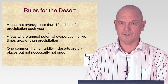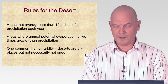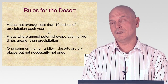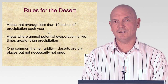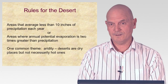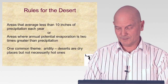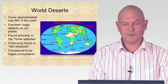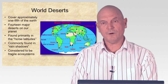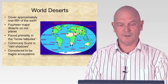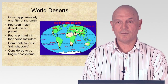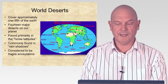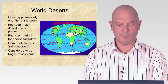One common theme of deserts is aridity — they are dry, and not necessarily hot. They can also be cold. For example, Antarctica is considered to be a desert because it receives less than 10 inches of precipitation a year, but it's very cold so it doesn't evaporate very fast. Deserts are important to us because about one-fifth of the earth's land is covered with desert.